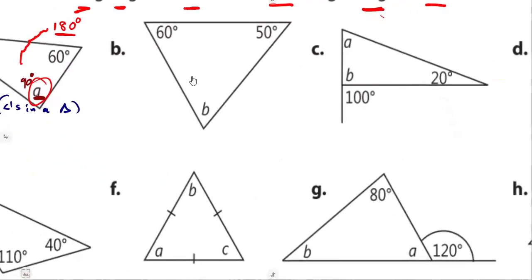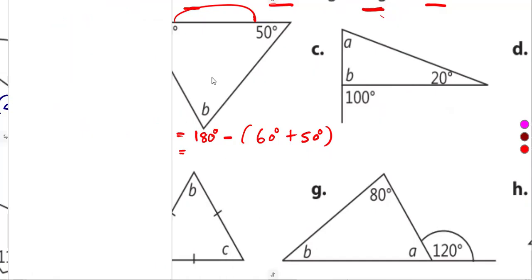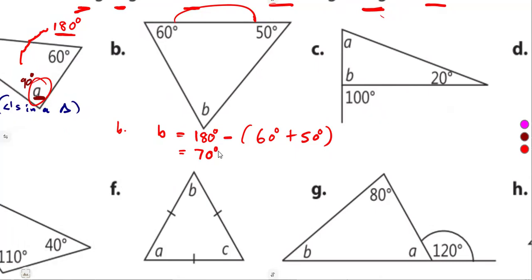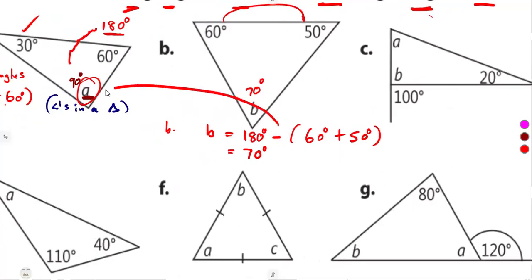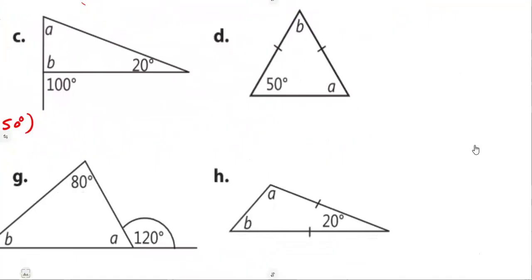Moving on to part b — same concept. Two angles are given and we want to find the third angle B. Angle B equals 180 degrees minus the two given angles: 60 degrees plus 50 degrees. Simplifying: 180 minus 110 gives us 70 degrees. So angle B is 70 degrees. The reason is the same: angles in a triangle add up to 180 degrees.